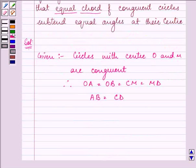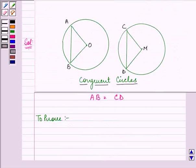What we need to prove is that the angles subtended by them at the center are equal, that is angle AOB equals angle CMD.